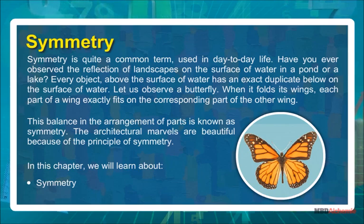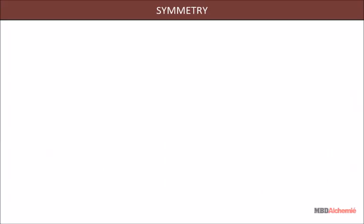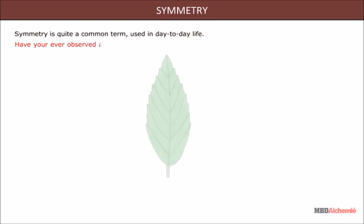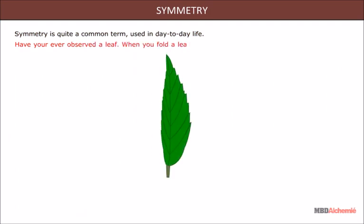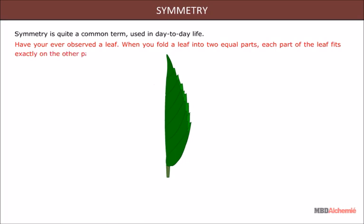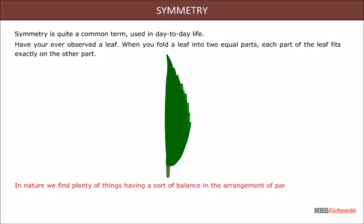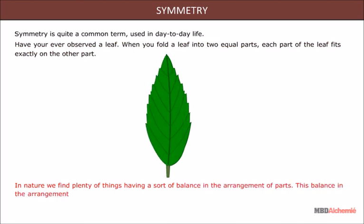In this chapter we will learn about symmetry. Have you ever observed a leaf? When you fold a leaf into two equal parts, each part of the leaf fits exactly on the other part. In nature we find plenty of things having a sort of balance in the arrangement of parts. This balance in the arrangement of parts is known as symmetry.